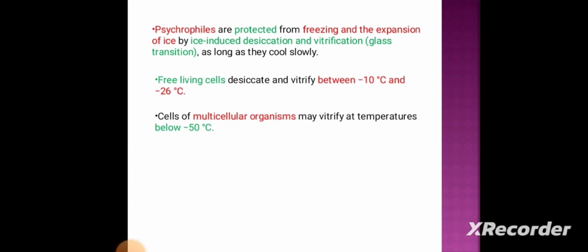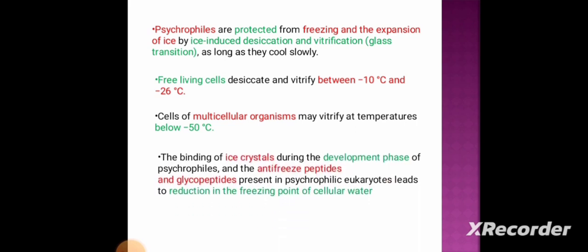Whereas the cells of multicellular organisms may vitrify at temperatures below minus 50 degrees Celsius. The binding of ice crystals during the development phase and the antifreeze peptides and glycopeptides present in psychrophilic eukaryotes leads to the reduction in the freezing point of cellular water.